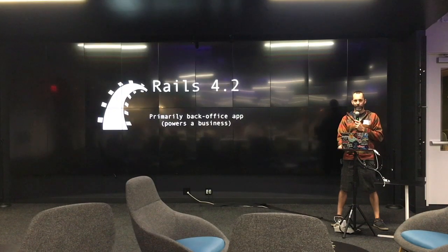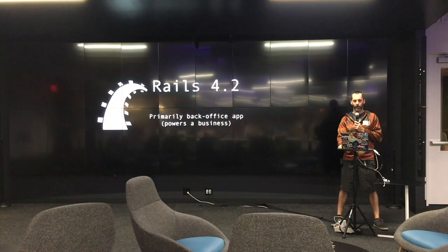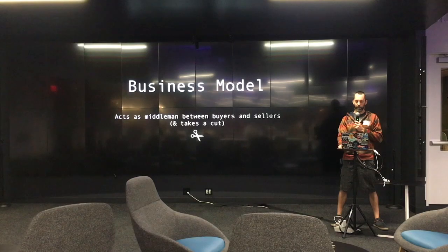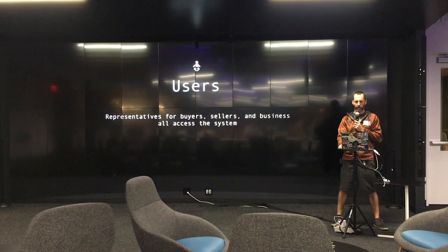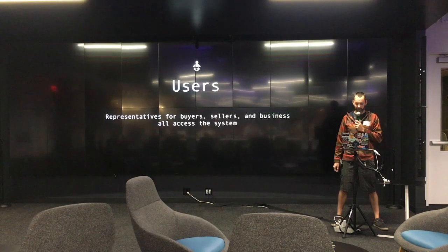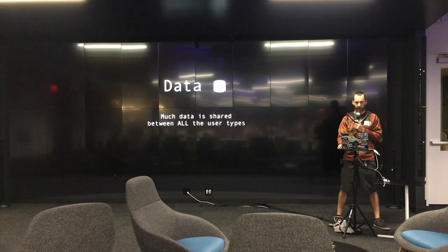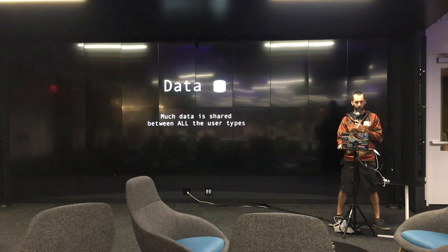In my day-to-day life, I pretty much spend it in a Rails 4.2 app that's a back office app and powers the business. The app primarily facilitates transactions between buyers and sellers and takes a percentage off the transaction. It has basically three different categories of users: representatives for the buyers, the sellers, and the business. Data tends to be shared between all three user types — there's very little data that belongs to any single user.